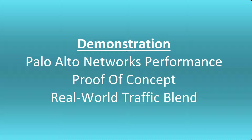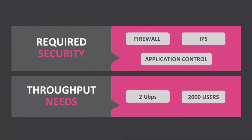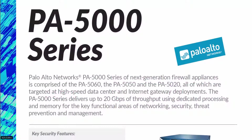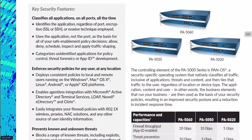When you are ready to buy a security appliance, how do you find the appliance that meets your requirements? You know your security requirements for firewall, IPS, and application control, and you also know your typical throughput. How do you size the appliance to meet your requirements and pick an appliance that will meet your current and future needs?